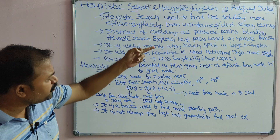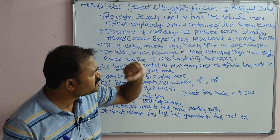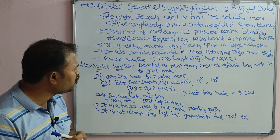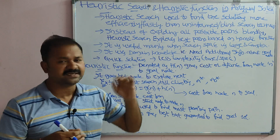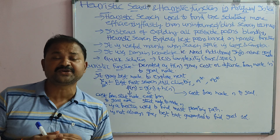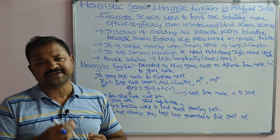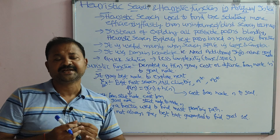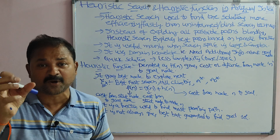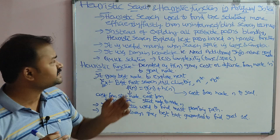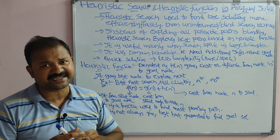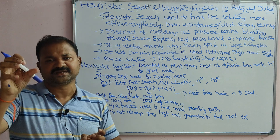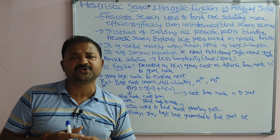Instead of exploring all possible paths blindly, heuristic search explores the best paths based on the heuristic function. With blind or uninformed search, we need to explore all possible paths, whereas with heuristic search we will explore only the best paths based on the heuristic function.